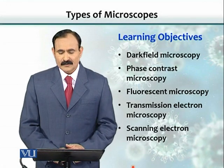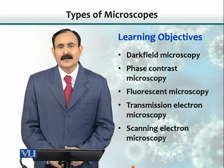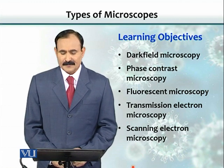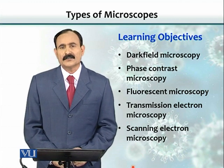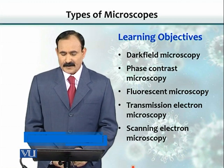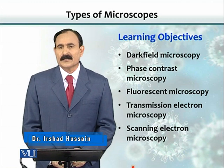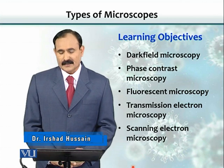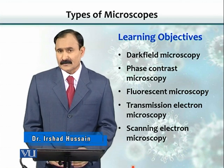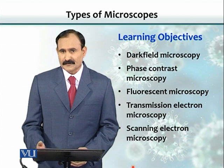Learning objectives include various types of microscopes: dark field microscopy, phase contrast microscopy, fluorescent microscopy, transmission electron microscopy, and scanning electron microscopy. There are many others also, but we would go through only a few of these.